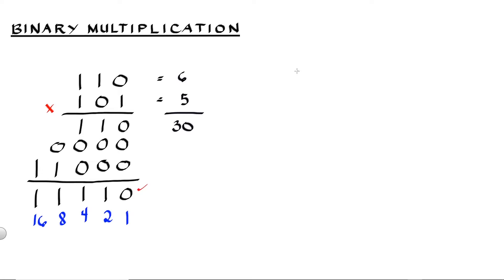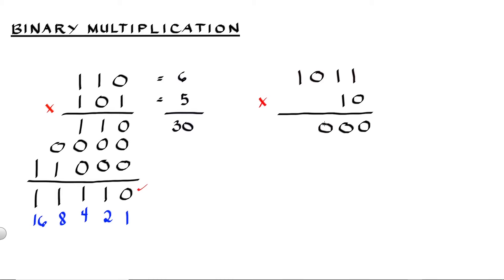For our second example, let's multiply 1, 0, 1, 1, 1 by 1, 0. If your multiplier digit is 0, just fill this row with 0s — so this is 0 and this is 0. To go to the next row, we need to add 0. Then 1 multiplied by 1, 0, 1, 1, 1 — we're going to get exactly these digits. So we have 1, 1, 1, 0, 1.